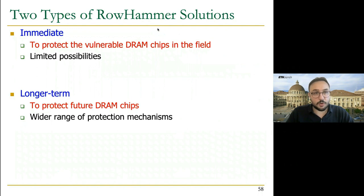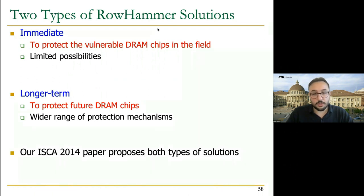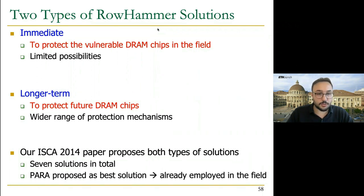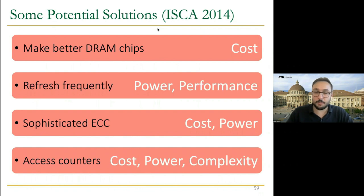I'll go back to understanding RowHammer papers, but before that I'd like to also talk about solutions. In the flipping bits paper in ISCA 2014, we classify solutions into two categories: immediate solutions targeting DRAM chips already in the field, and long-term solutions targeting chips that will come in the future. Our ISCA 2014 paper proposes both types, seven solutions in total — including making better DRAM chips, increasing refresh frequency, more sophisticated ECC, and counter-based access countermeasures.